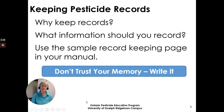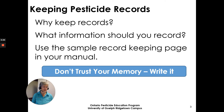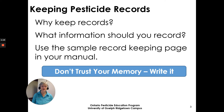Records are important. Unless we document what we do and keep track, we don't have a good understanding of what happened in the field. Our memories are not as good as they used to be. There's a pesticide application record in your manual and you can use that sample record-keeping page or create one of your own. There are also many electronic computer applications you can use. Don't trust your memory — write it down.